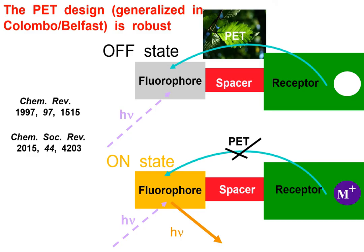The fluorescent sensors and logic systems are made from a design called the PET design, which started off in Colombo, which I'm very proud to mention. It was continued in Belfast and has grown into a major design tool for sensors and logic systems now. It starts off with a picture of a green leaf. Green leaves conduct photosynthesis.